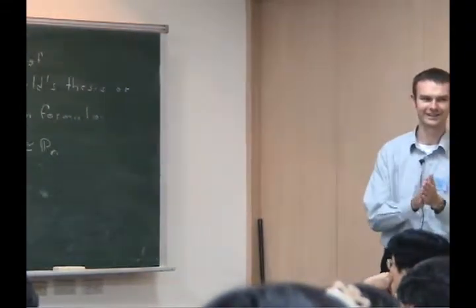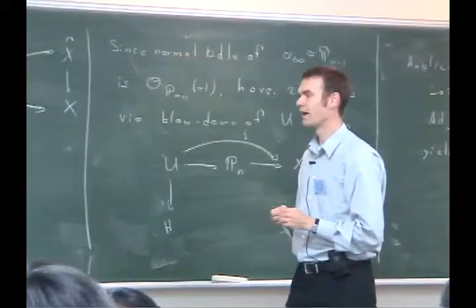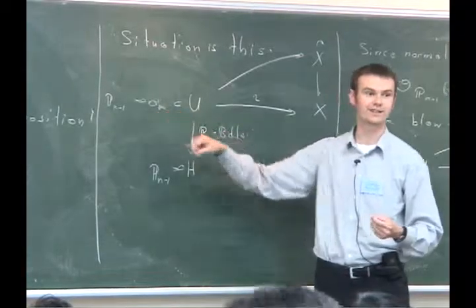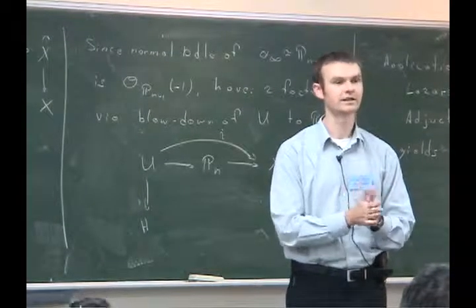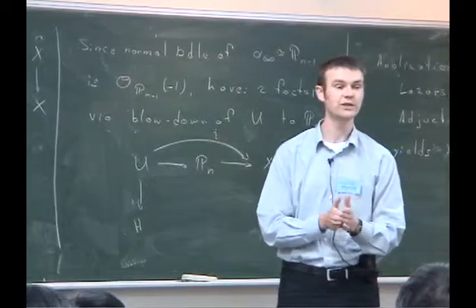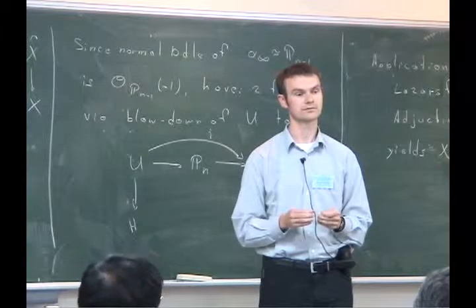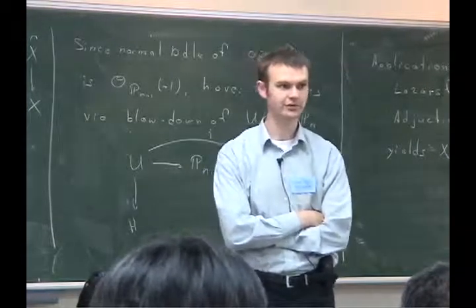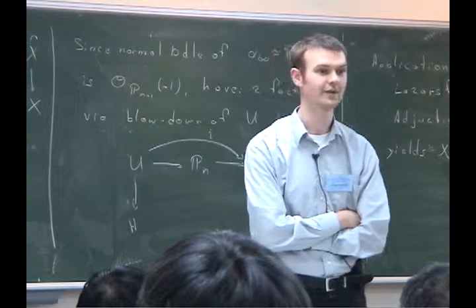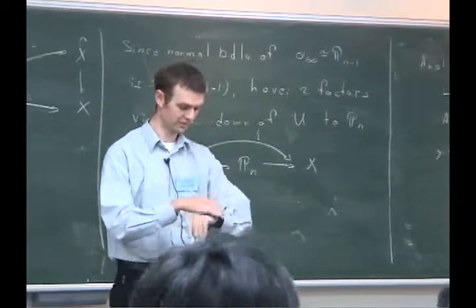With the adjunction formula approach, you use that the minimal degree rational curves intersect the canonical bundle with multiplicity n+1, compare with lines in P^n intersecting the canonical bundle of P^n with multiplicity n+1, apply the adjunction formula for branched coverings and compare intersection numbers — this tells you immediately that the map is birational. So it's much easier than applying Lazarsfeld's thesis. That concludes the proof.